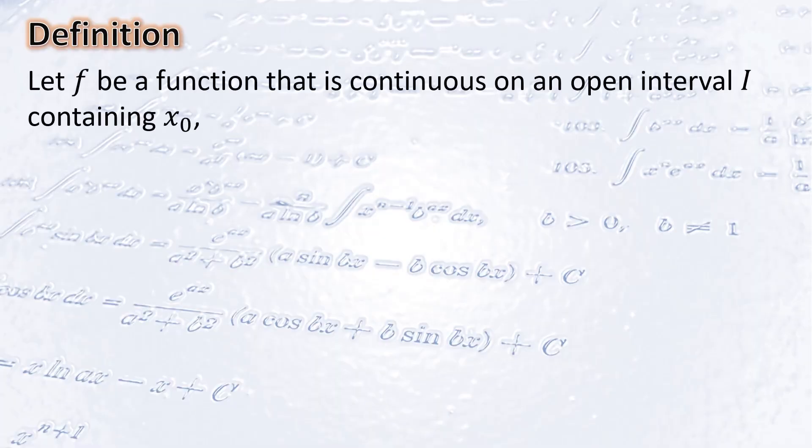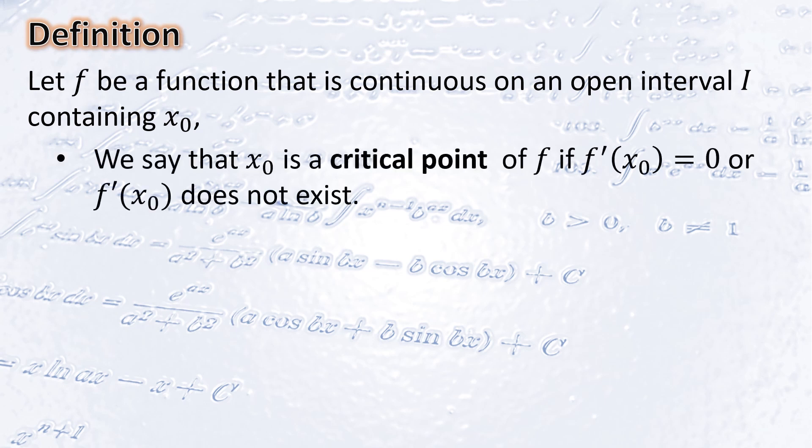Let us begin with some definitions. Let f be a function that is continuous on an open interval I containing x₀. We say that x₀ is a critical point of the function if f prime of x₀ is equal to zero, or f prime of x₀ does not exist — that is, the function has a corner or a cusp at the point (x₀, f(x₀)).